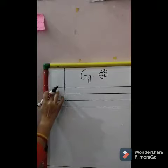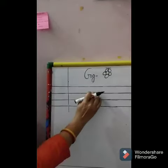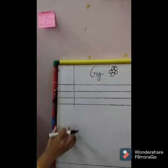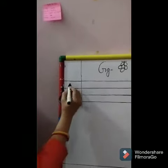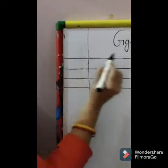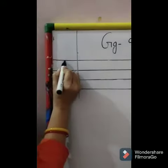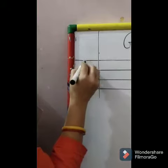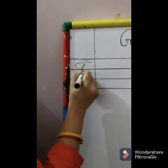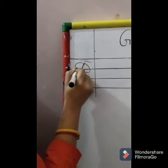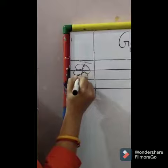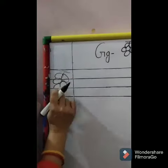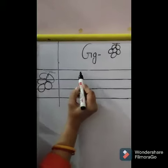Yahaan pey hum log picture banayenge. Jho letter liktay hai, uske saamne me jho column banayate hai, har line me apan loog picture banayenge, thik hai? G for kya hata hai? Grapes. Toh hum loog yahaan pey grapes ki picture banayenge. Aisai, thik hai? Aap loog bhi banauo gae, jiasse maim ne banayi hai, vaisse aap loog bhi banauo gae.